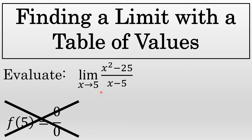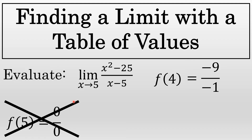However, notice that 5 is the only number that cannot be substituted for x in this expression. If this was a function f of x equals x squared minus 25 over x minus 5, we could substitute a 4. We could evaluate f of 4 without any problem at all. f of 4 would be 16 minus 25 over 4 minus 5, which is negative 9 over negative 1. That equals 9.